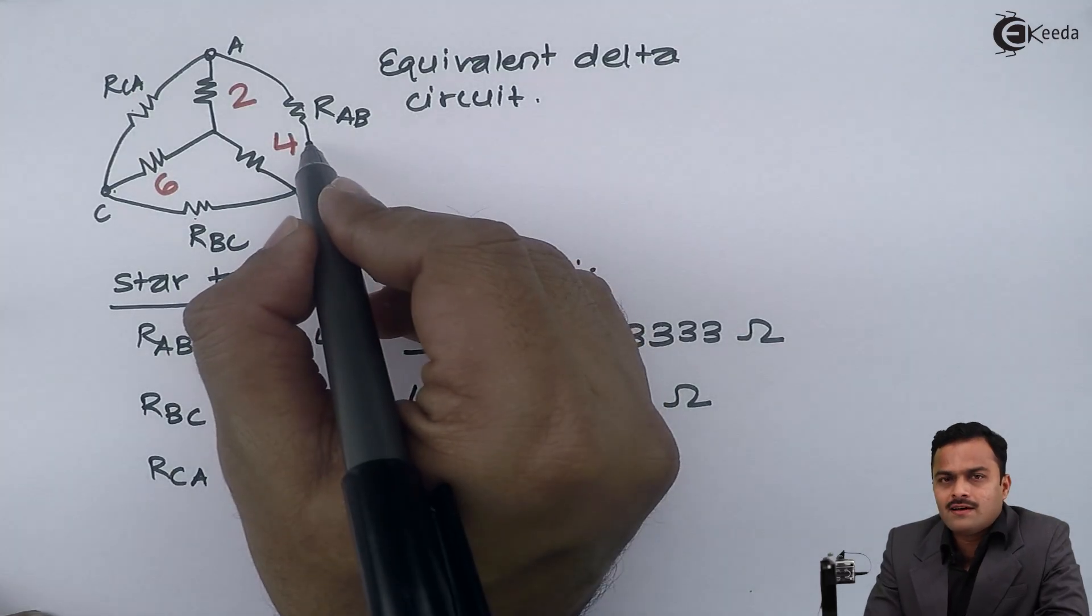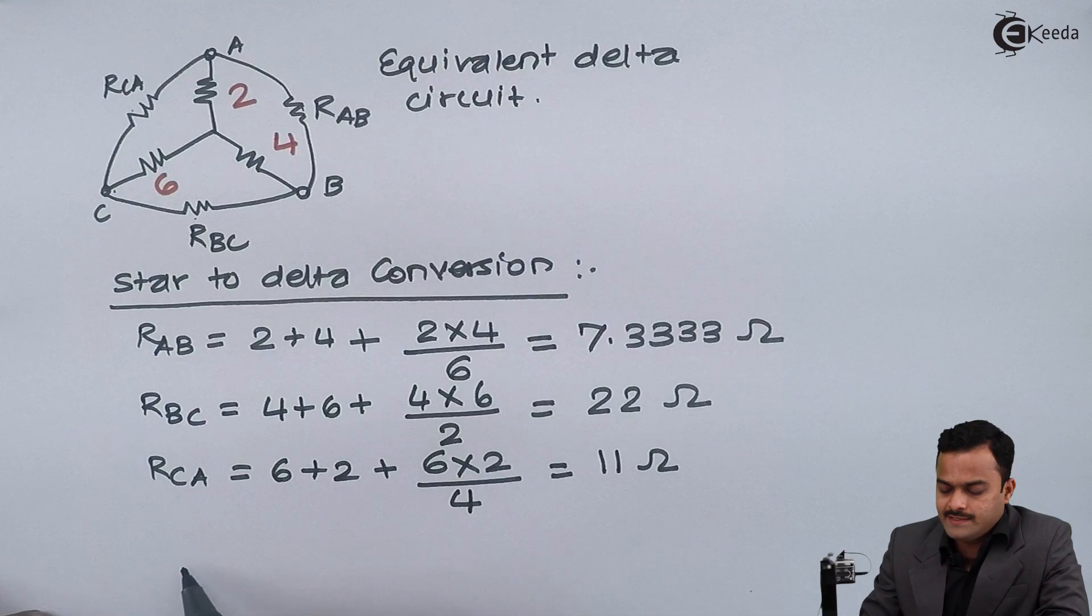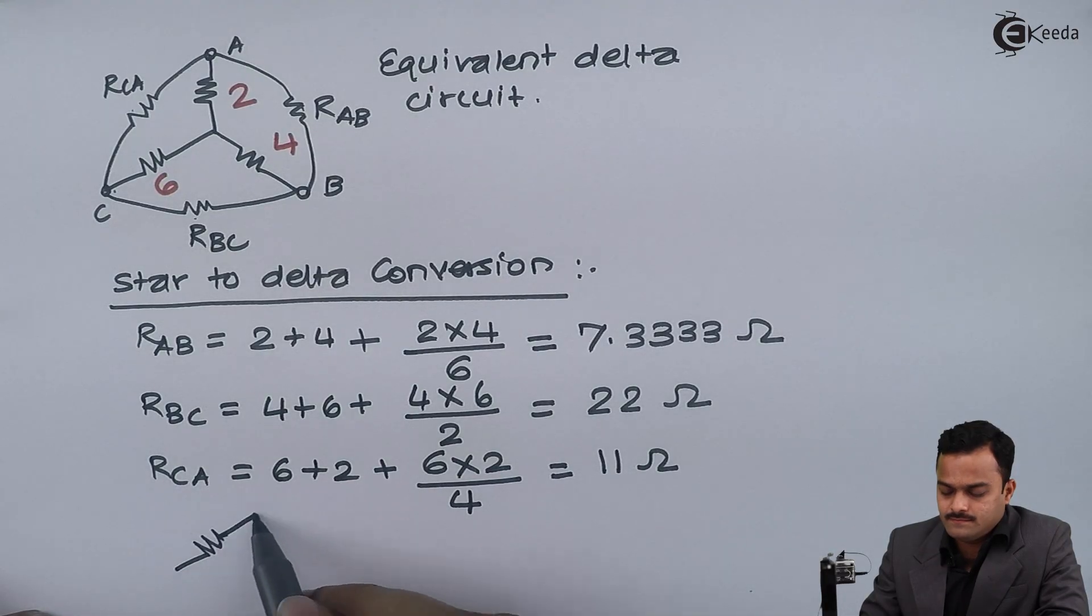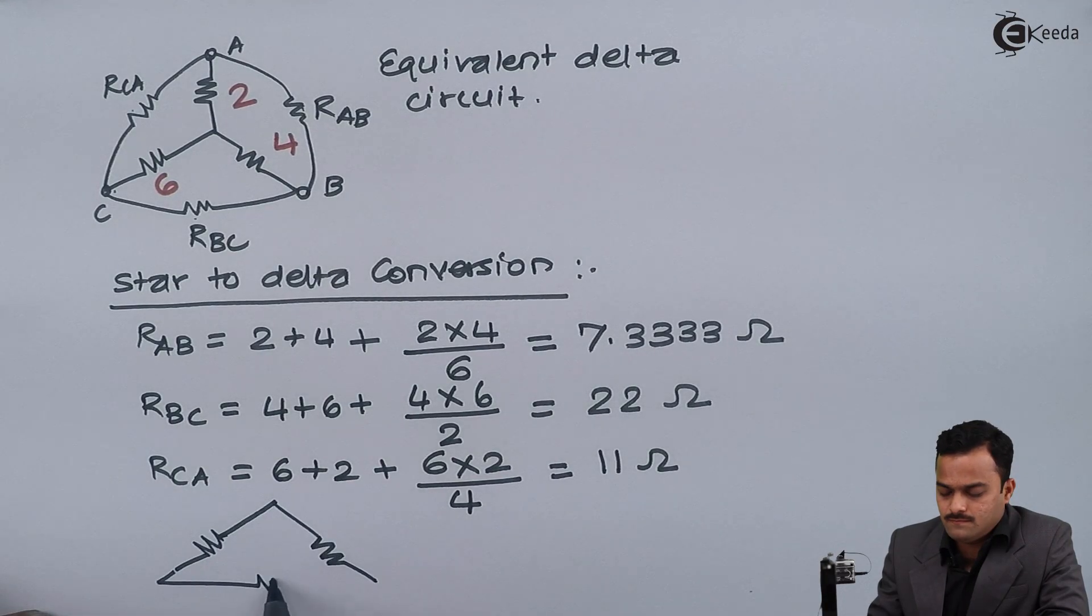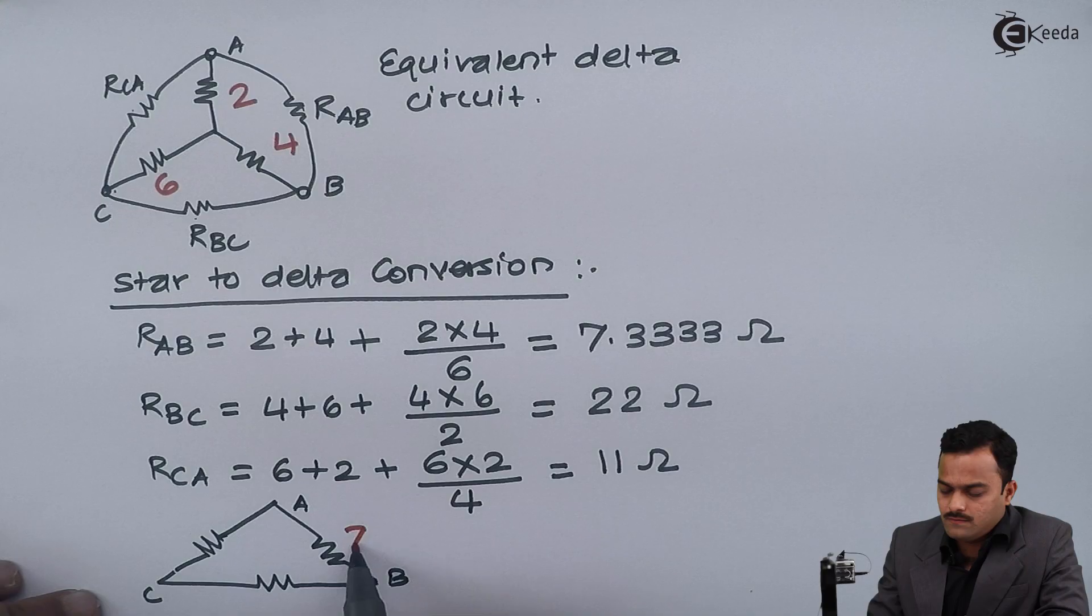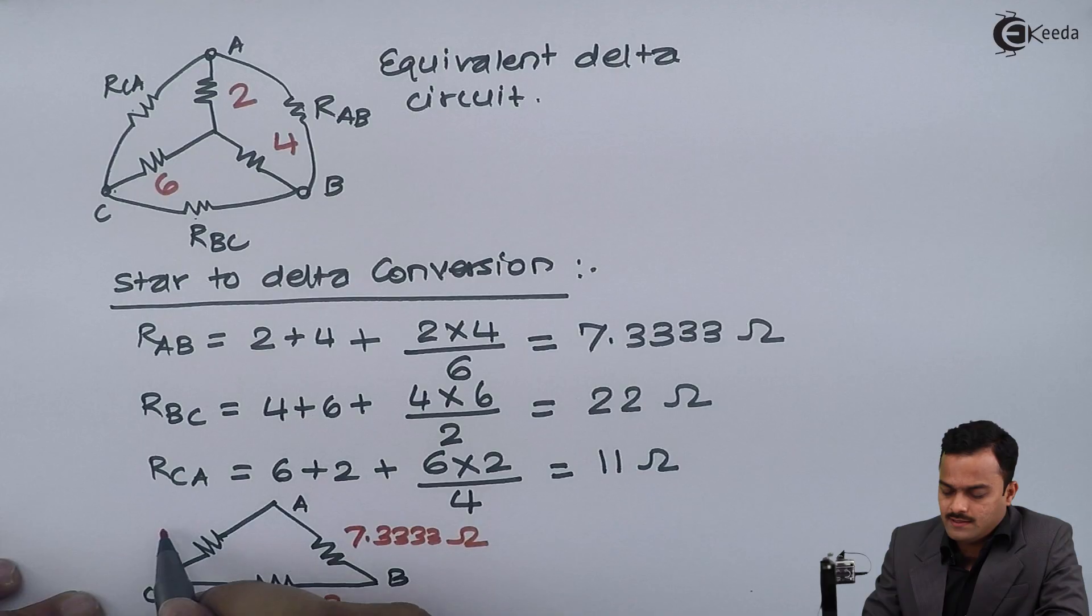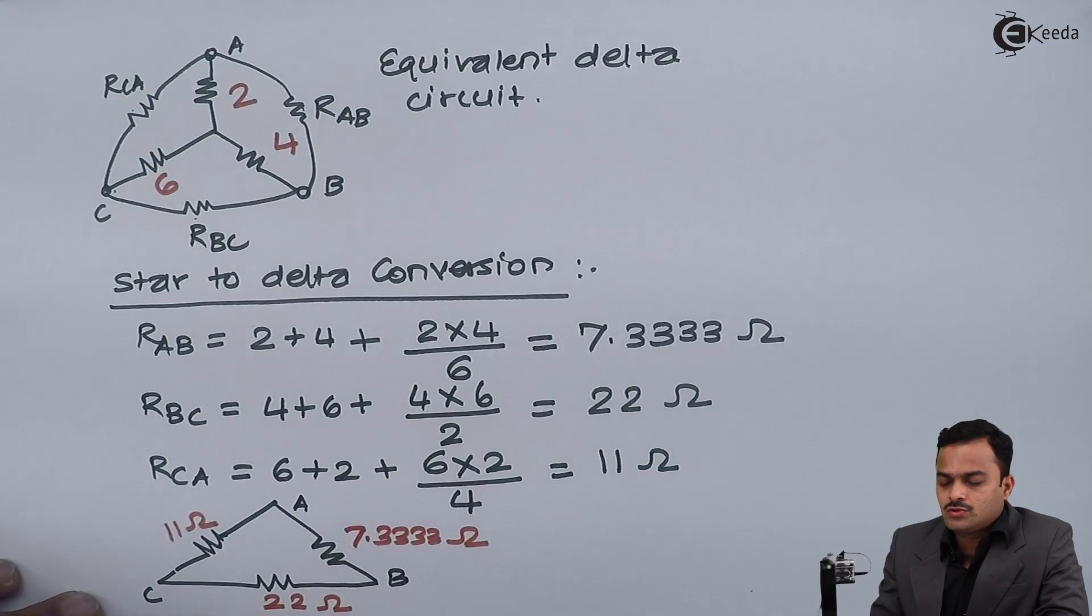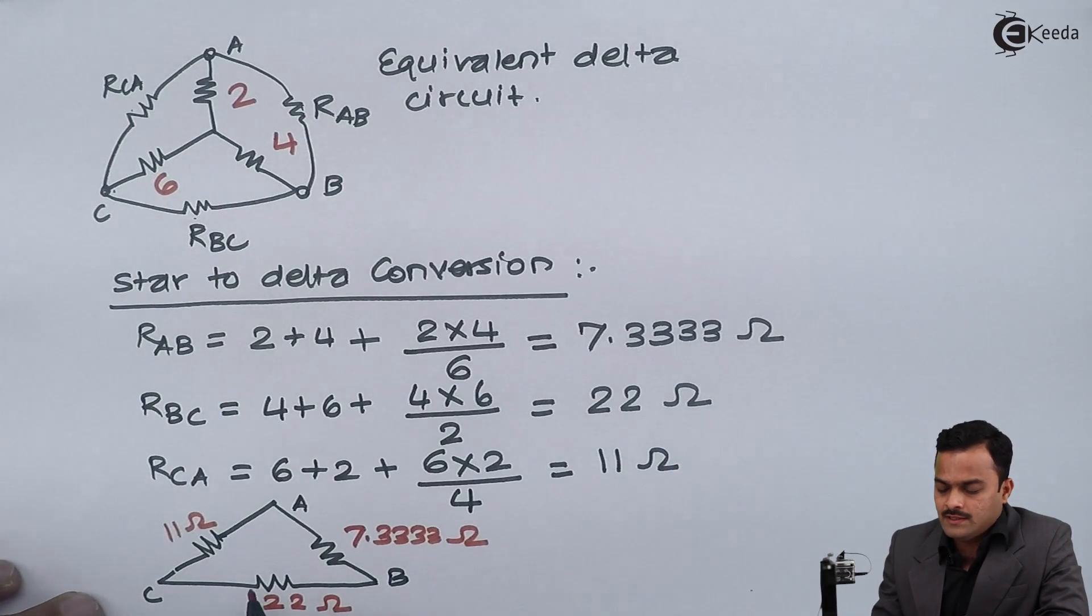Actually this particular star is getting converted in delta like this. Between a and b I will get 7.3333 ohm. Between b and c I will get 22. And between c and a I will get 11 ohm. So, the answer for this problem is this.